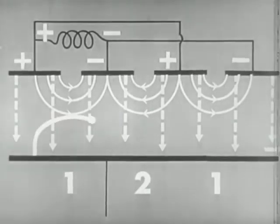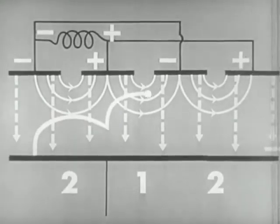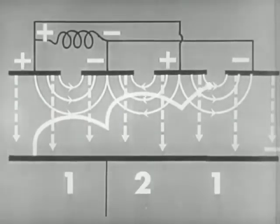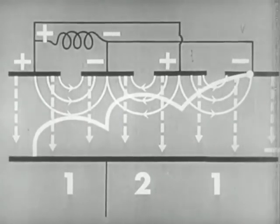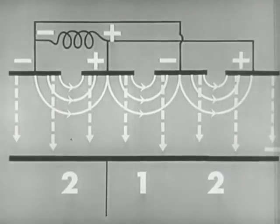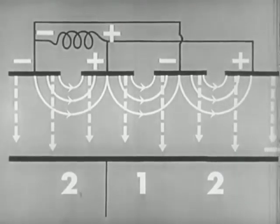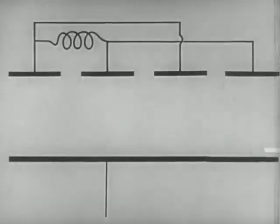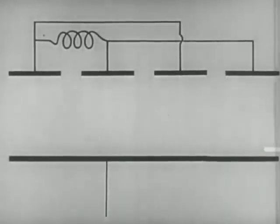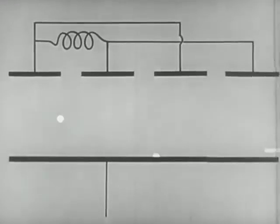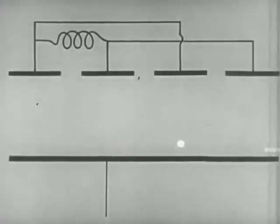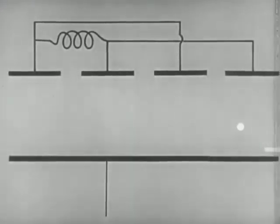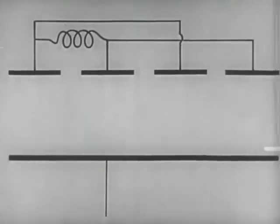All electrons which move from the cathode to the anode will follow this course. Of course, in a pulsed magnetron oscillator, where the electric field does not exist between pulses, the electrons will be affected only by the magnetic field and so will be returned to the cathode.